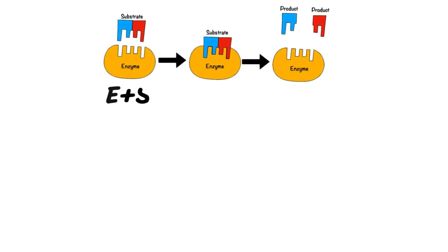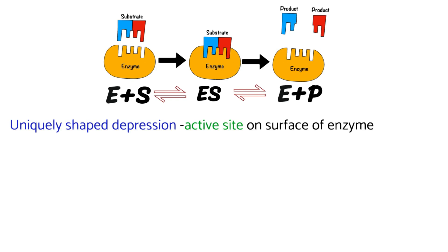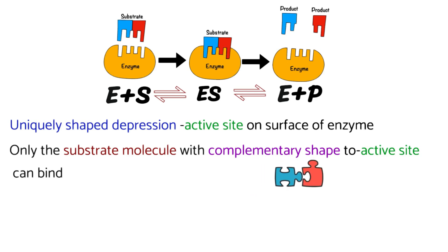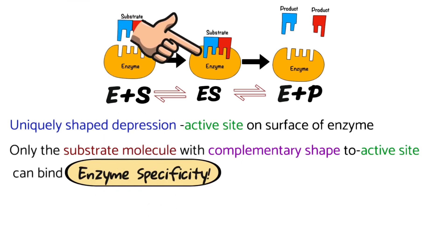The key points when talking about enzyme specificity and active site theory: every enzyme has a uniquely shaped depression called the active site on its surface. It has a very unique shape particular to that enzyme. Only a substrate molecule with a complementary shape to the active site can bind, and this is why enzymes are specific — it explains enzyme specificity.